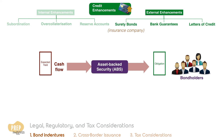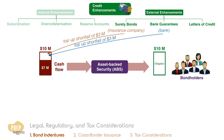External credit enhancements include surety bonds, bank guarantees, and letters of credit from financial institutions. Surety bonds are issued by insurance companies, while bank guarantees are from banks. Both serve the same function: they are a promise to make up any shortfall in the cash available to service the debt. For example, if the expected cash flow to debt holders is $10 million but the actual cash flow is only $7 million, the insurance company or bank will top up the shortfall of $3 million.